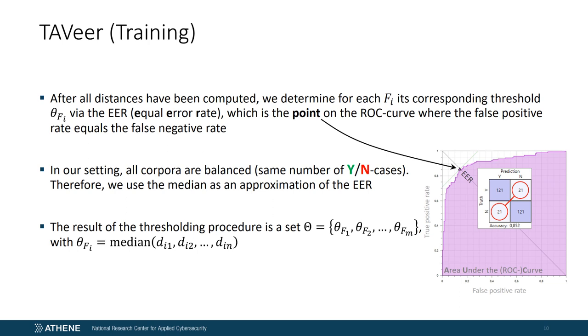Once all distances have been computed, we determine for each feature category F_i its corresponding threshold theta_F_i using the equal error rate. Essentially, this is the point on the ROC curve where the false positive rate equals the false negative rate, as can be seen in the illustration on the right. In our setting, all corpora are balanced, that means that the yes and no cases are evenly distributed. We therefore consider the median as an approximation of the equal error rate. The result of this procedure is a set of thresholds for all feature categories, where each theta_F_i is calculated by the median of the n distances with respect to F_i.